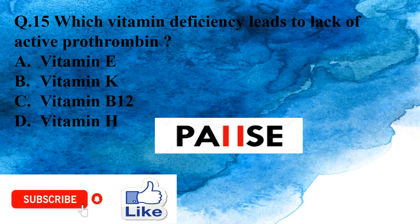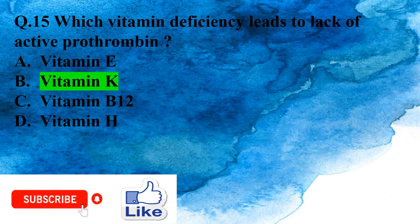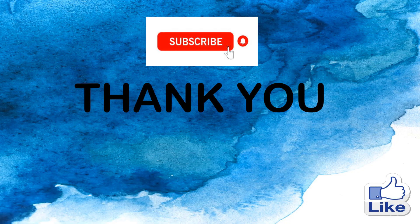Question 15: Which vitamin deficiency leads to lack of active prothrombin? Option A: Vitamin E, Option B: Vitamin K, Option C: Vitamin B12, Option D: Vitamin H. The right answer is Option B, Vitamin K.